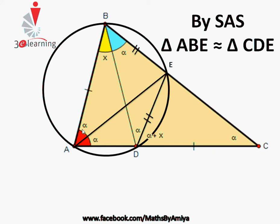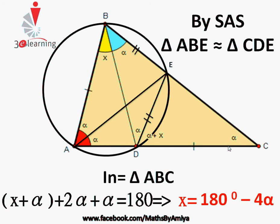Now we know the complete angles of the triangle: x at B, 2α at A, and α at C. Since the total angles in a triangle sum to 180°, we get x + 2α + α + α = 180°, which gives x = 180° − 4α. We started from a single construction, found a cyclic quadrilateral, identified a triangle similarity, and obtained the required result.